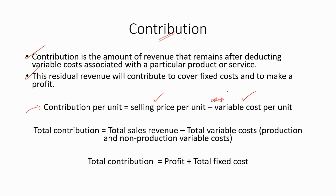Here we have to consider all variable costs — this is really important. So if we want to calculate the total contribution, it is equal to total sales revenue minus total variable costs, where both production and non-production variable costs should be considered. The second method is contribution equals profit plus total fixed costs. These formulas are really important. You should have an overall understanding and be able to apply them under marginal costing.